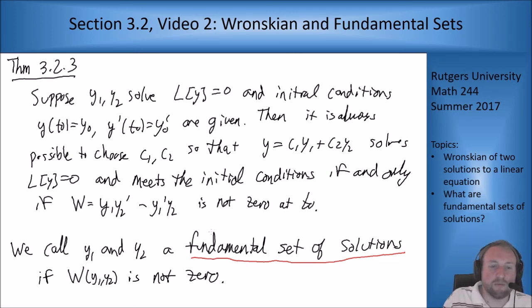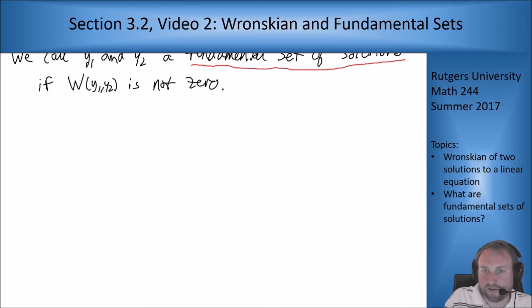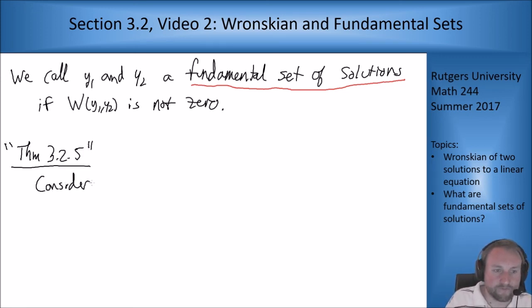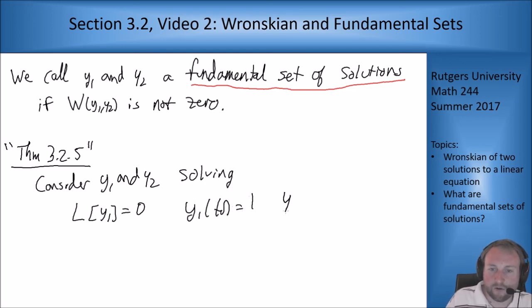While it might be hard to find these solutions in general like actually solving for them they do always exist and that comes from the fact that we have our existence and uniqueness theorems. This is theorem 3.2.5. Consider y1 and y2 solving the following initial value problems. L of y1 equals 0, Y1 at t0 equals 1, Y1 prime at t0 equals 0.